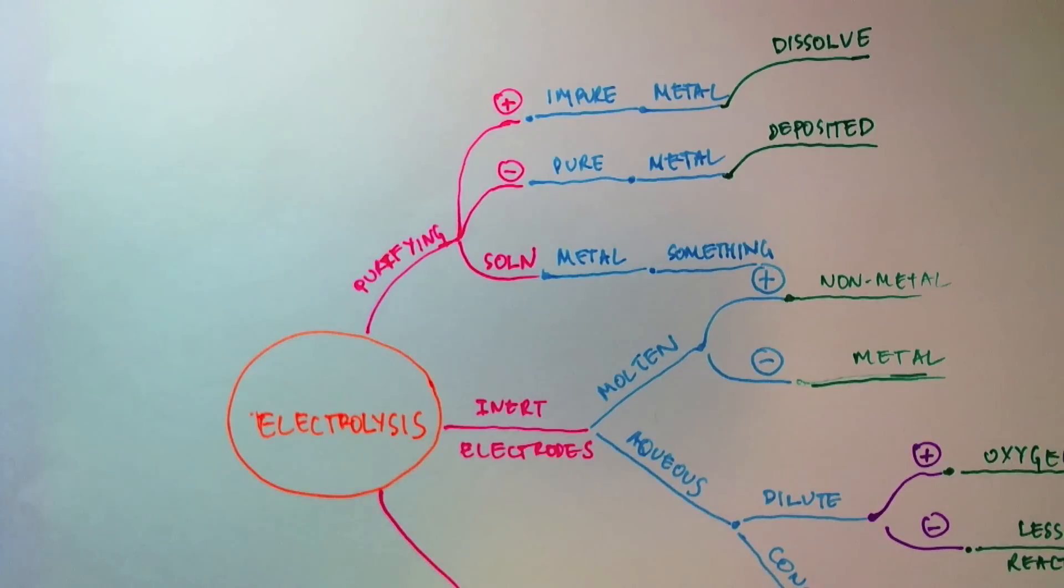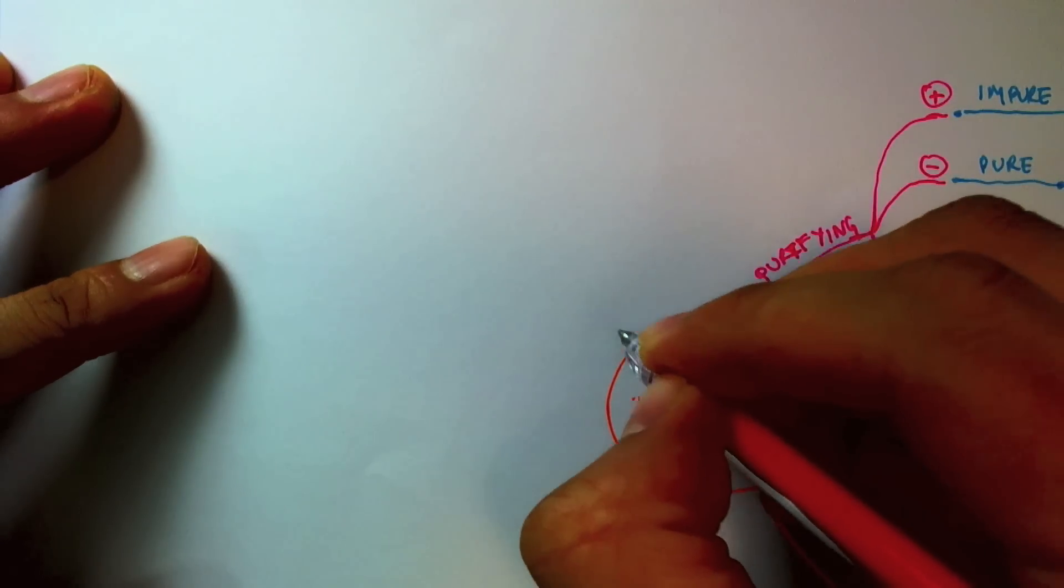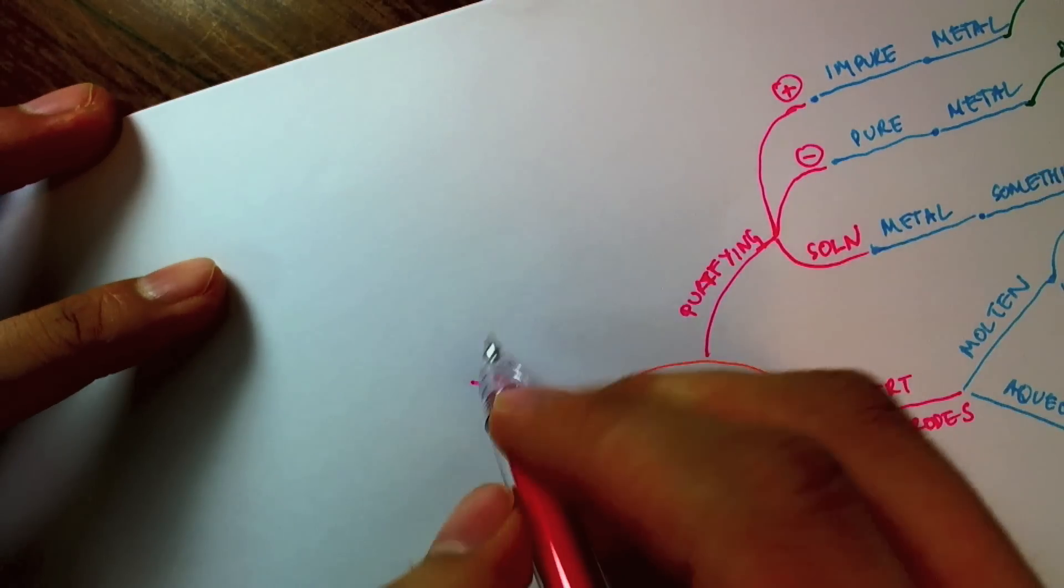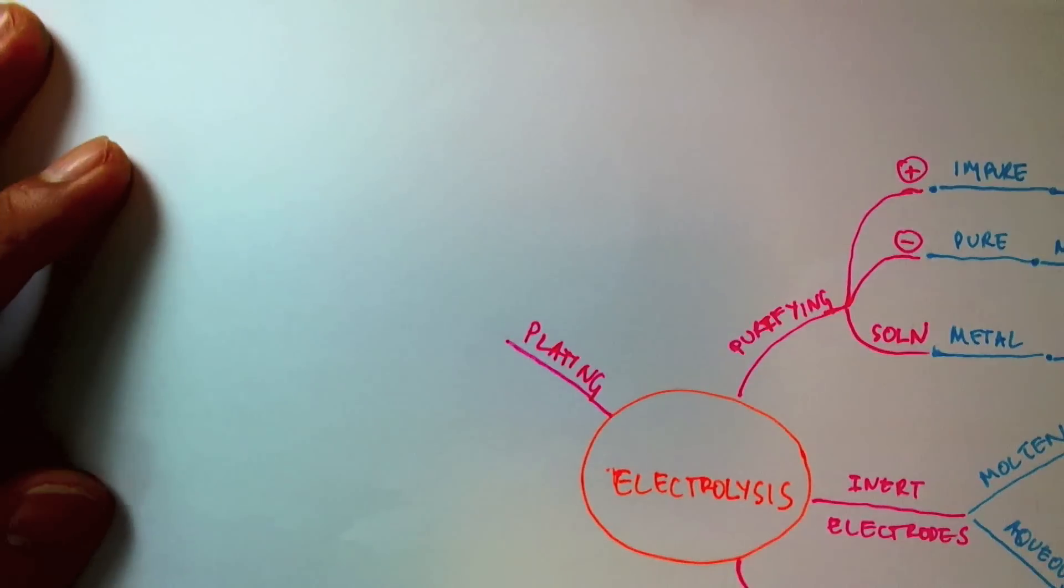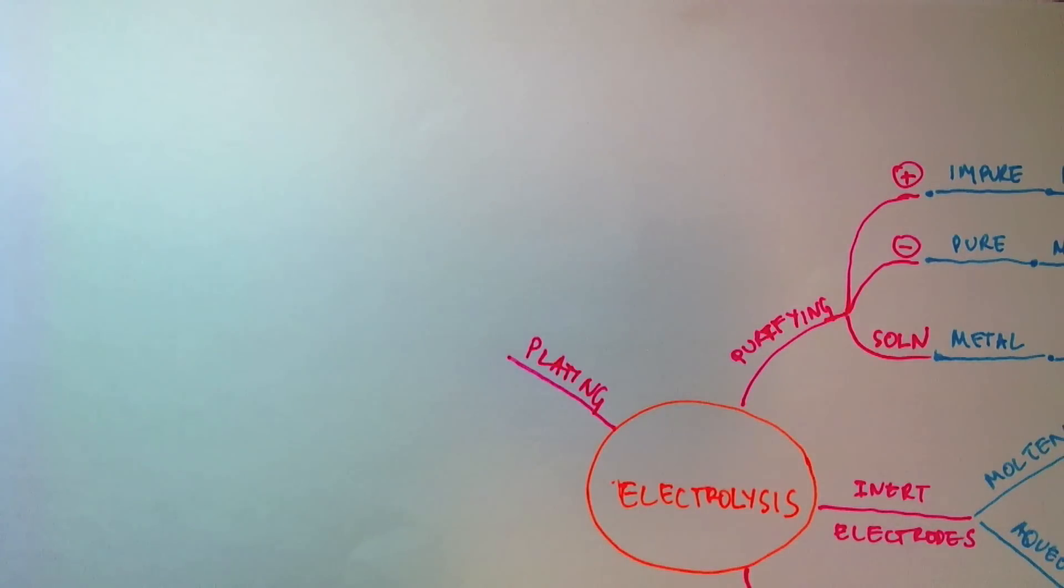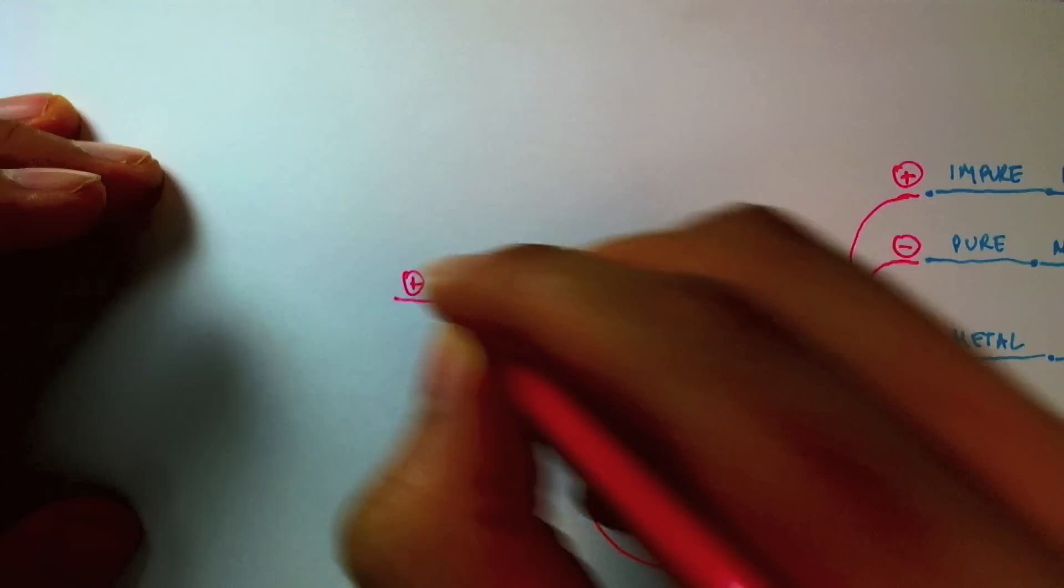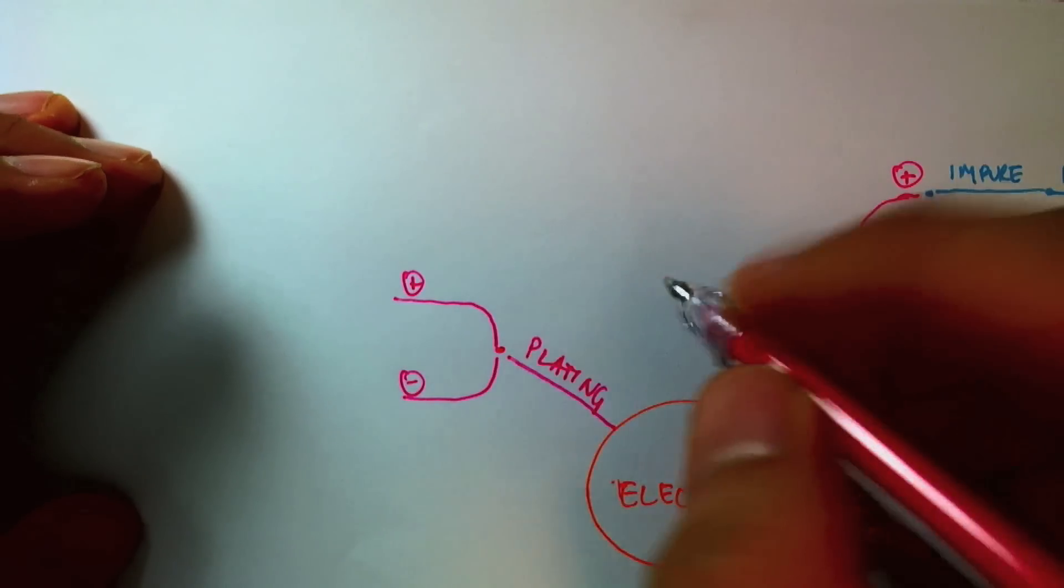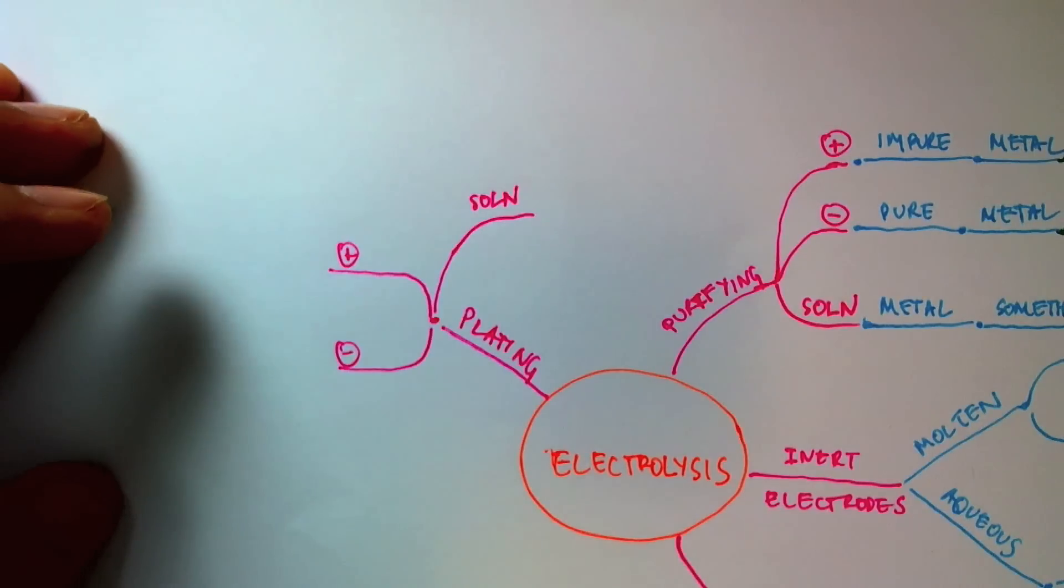The next thing we looked at was the plating of one metal onto another metal to prevent it from corrosion, improve the way it looks, et cetera. And in particular, we looked at the plating of nickel spoon with silver. But in reality, there are a whole host of other metals we could plate it with. So I'll just try and leave this as general as possible. So we have the anode, cathode, and we need to decide what we use for the electrolyte, the solution.